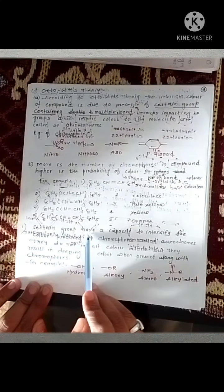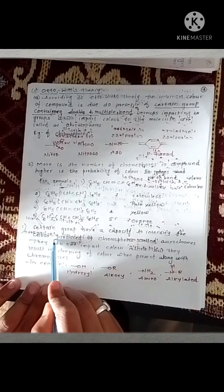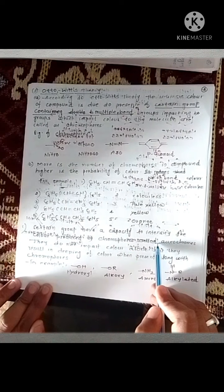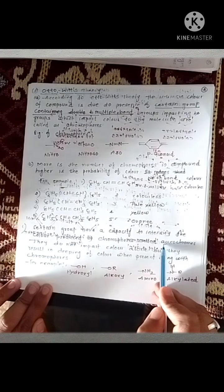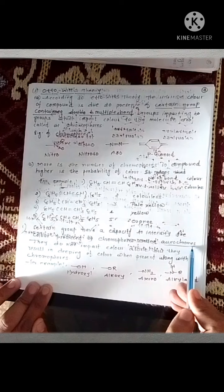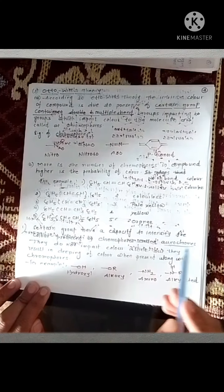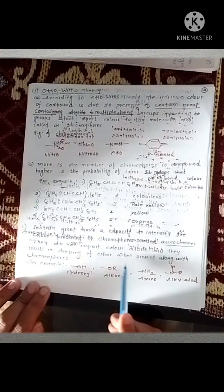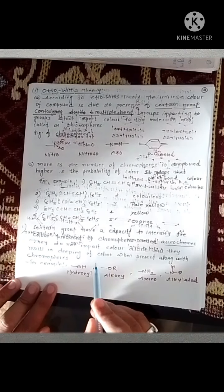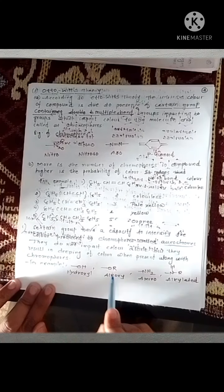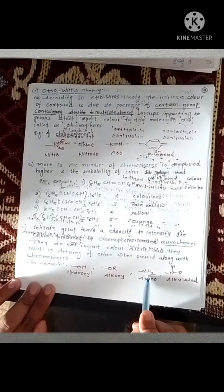Certain groups have the capacity to intensify the color produced by the chromophore; these groups are generally known as auxochromes. Auxochromes are groups which intensify the color — they do not produce color themselves. Some examples of auxochromes are the hydroxyl group, alkoxy group, and amino group.